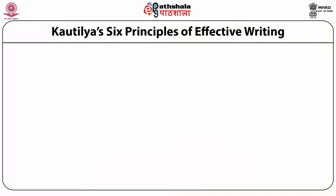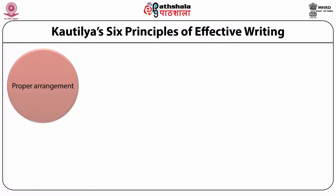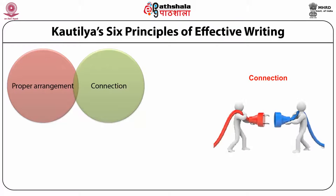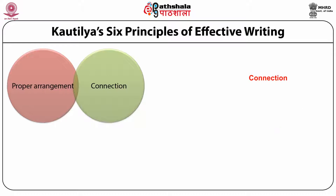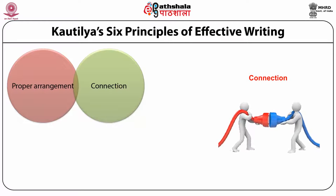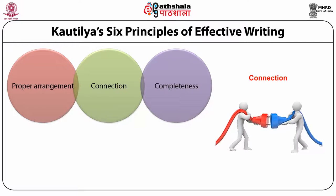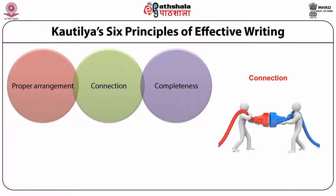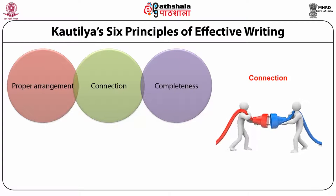Kautilya has given six principles of effective writing. The first is proper arrangement — that is, logical building up of the structure of content, starting with the mention of the most important or prime theme of the subject matter. The second principle is connection — linking subsequent themes with previous ones without the next being incompatible with the previous one, right up to the end. The third principle is completeness — the written document being just right in content, without any excess or deficiency of matter, words or letters.